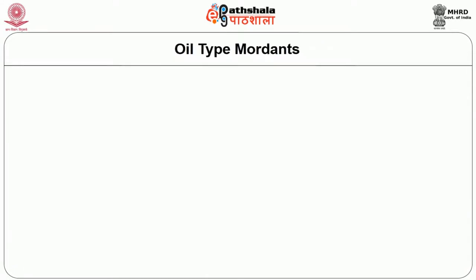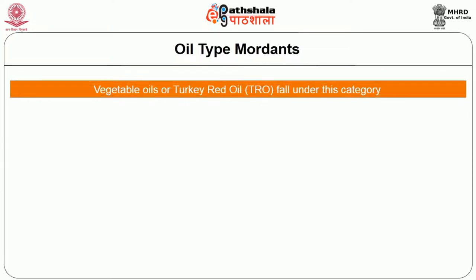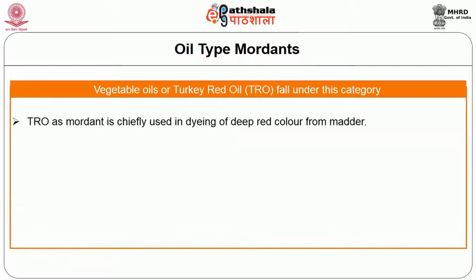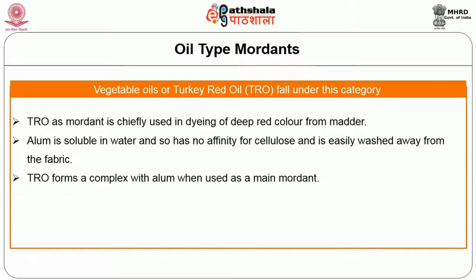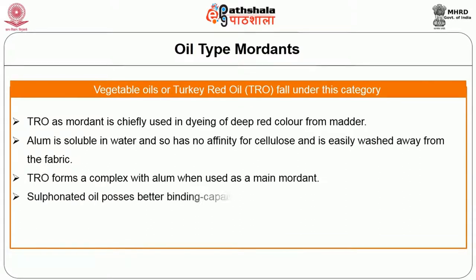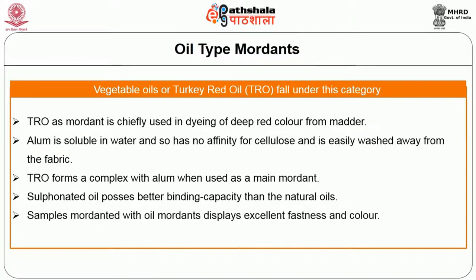The next category is oil type. Vegetable oil or turkey red oil fall under this category. Turkey red oil as a mordant is chiefly used in dyeing of deep red colour from madder. Alum is insoluble in water and has an affinity for cellulose but is easily washed away from fabric. Turkey red oil forms a complex with alum when used as a main mordant. Sulphonated oil possesses better binding capacity than natural oils, and samples mordanted with oil mordants display excellent fastness and colour.